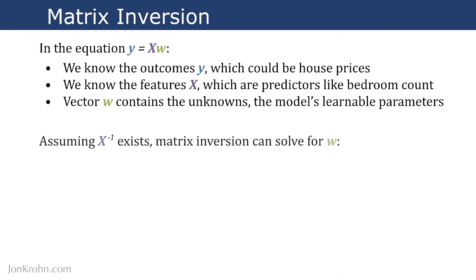So assuming that the inversion of the matrix x exists, and at the end of this video, I'll describe situations where it doesn't exist, the limitations of finding the inverse, but assuming that the matrix inverse does exist, then matrix inversion can solve for the unknown w. Let's derive it quickly. So here is an equation where I've just flipped the left and the right side of the equation, so instead of y equals xw, we have xw equals y. That's exactly the same.